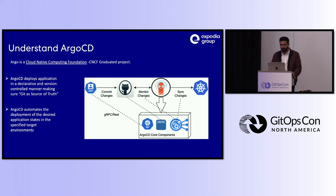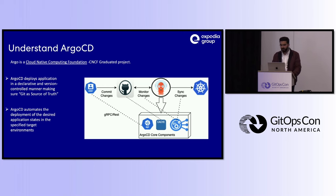Now, understanding Argo CD in a very simplistic manner — Argo CD is a CNCF graduated project that deploys applications in a declarative, version-controlled fashion, with GitHub as the source of truth. In a basic flow: a user commits changes to GitHub, Argo CD monitors those changes, and syncs them back to the Kubernetes cluster, so GitHub always remains the source of truth.